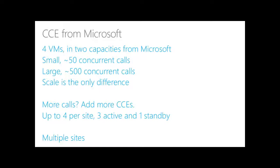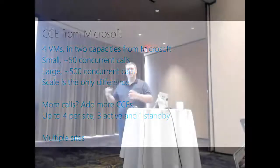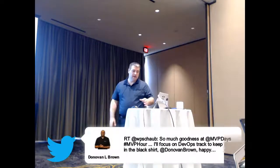When you get Cloud Connector Edition from Microsoft, it comes in two capacities: one for 50 users and one for about 500 users. If you need 700 simultaneous calls, you would deploy two CCE instances. You can deploy up to four — three active and one passive — giving you up to 1,500 calls. If you need still more, you can deploy multiple sites, but there's a maximum of four CCEs in any given site.